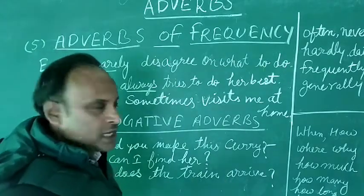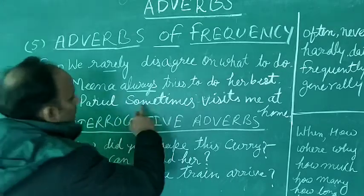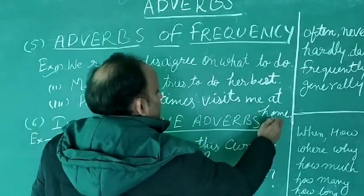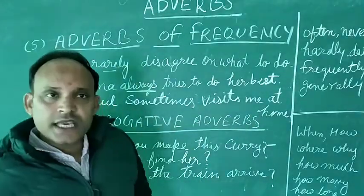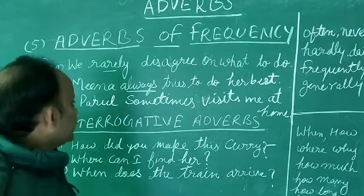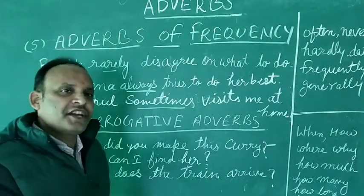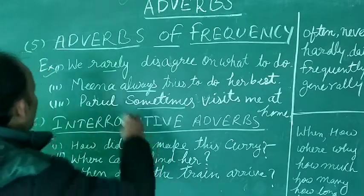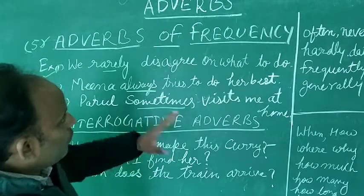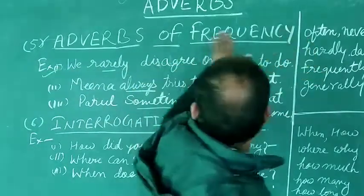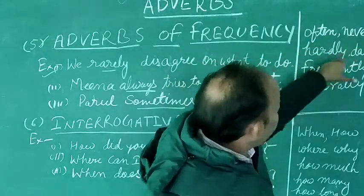So here you can see how frequently and how often Mina tries to do her best. The answer is 'always' — Mina always tries. And 'Paru sometimes visits me at home.' How often does Paru visit me at home? The answer is 'sometimes'. So these actions are done repeatedly, and that is what Adverbs of Frequency tell us.